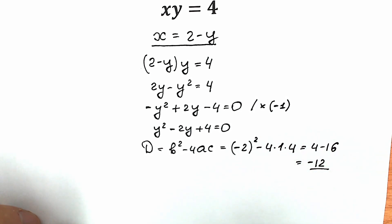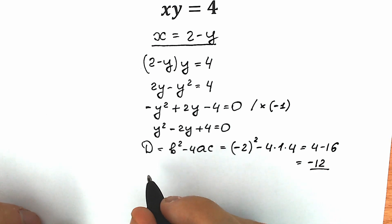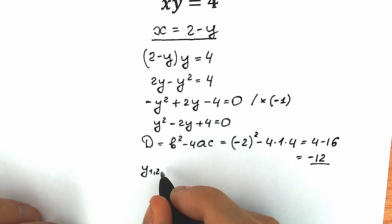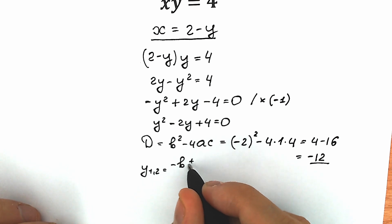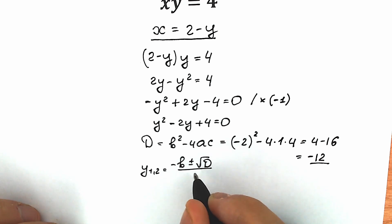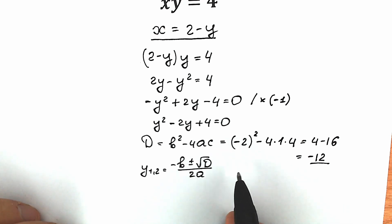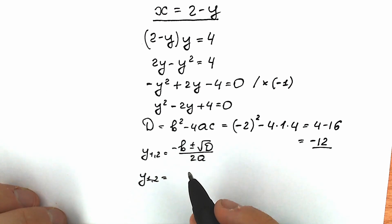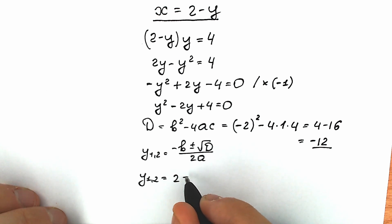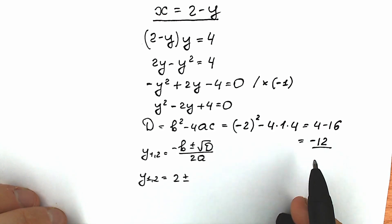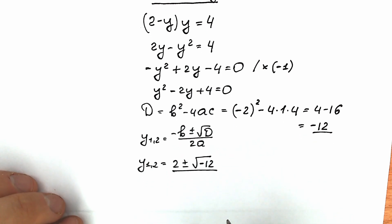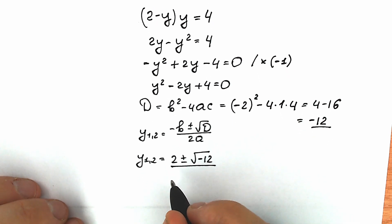So it means that we have complex roots here. Let's find them. The basic formula: y₁ and y₂ equal to minus b plus or minus square root of the discriminant, all over 2a. Plugging in: minus b gives minus(minus 2) which is 2, plus or minus square root of minus 12, all divided by 2.